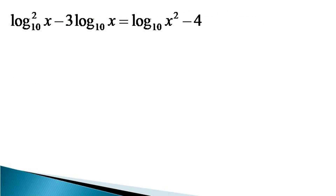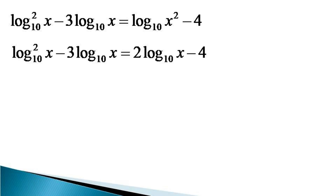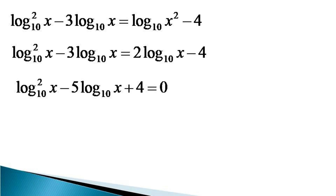To solve this equation, first we use the power law of log on the first term of the right-hand side. This makes the equivalent equation: log x squared minus 3 log x is equal to 2 log x minus 4. We bring all the terms to the left-hand side to get log x squared minus 5 log x plus 4 is equal to 0.